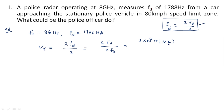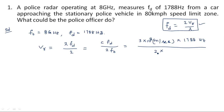Units are very important here — c is in meters per second. Substituting: fd = 1788 Hz, divided by 2 times f0 = 8 GHz = 8 × 10^9 Hz. The Hz units cancel, and simplifying gives 33.5 meters per second.